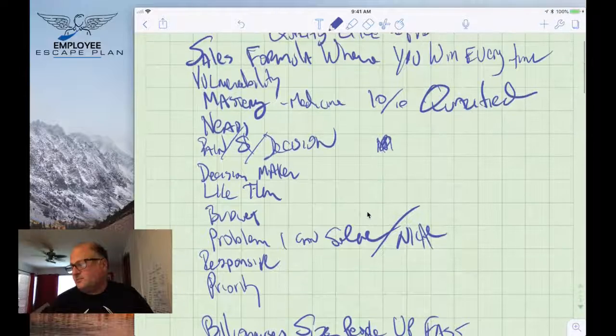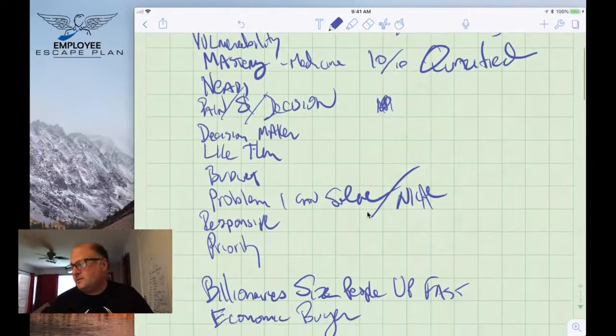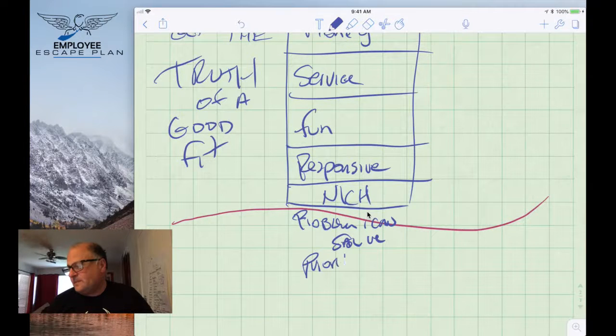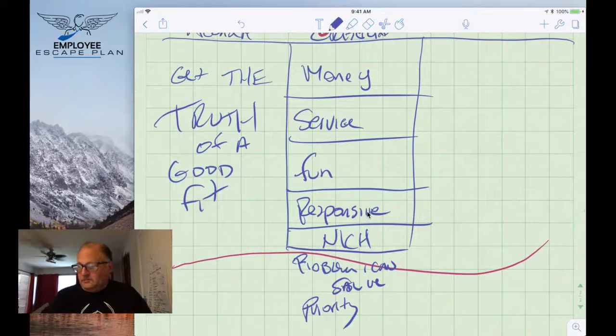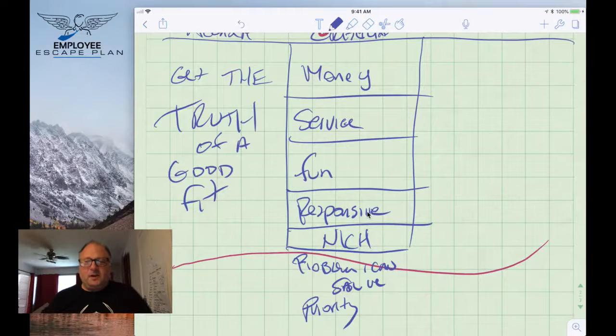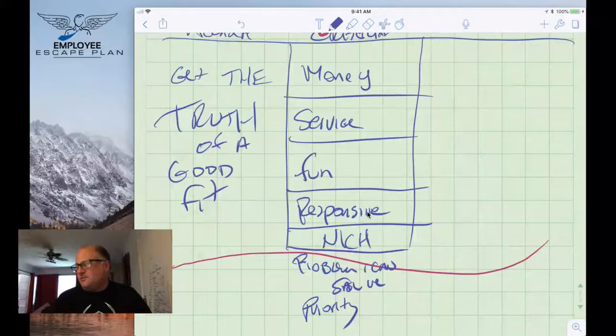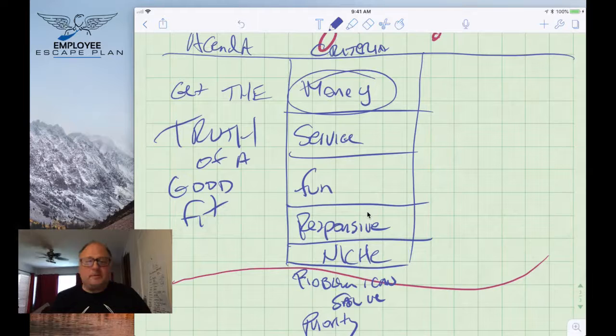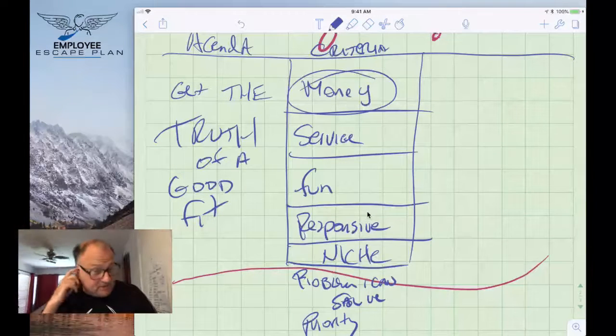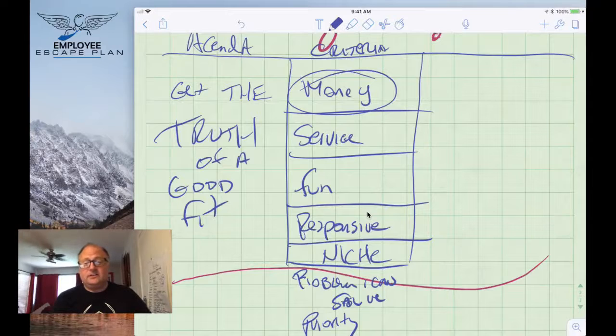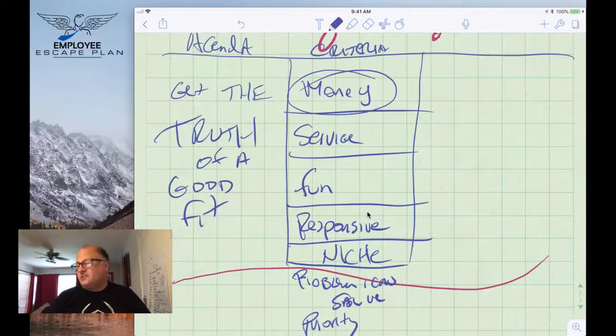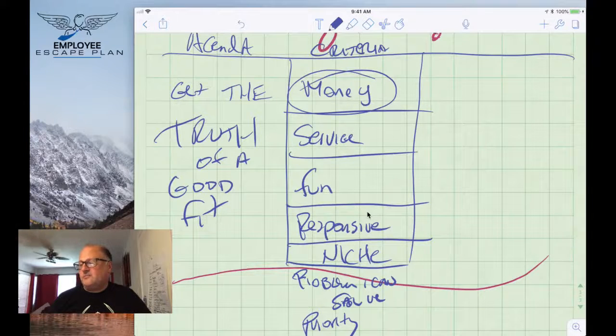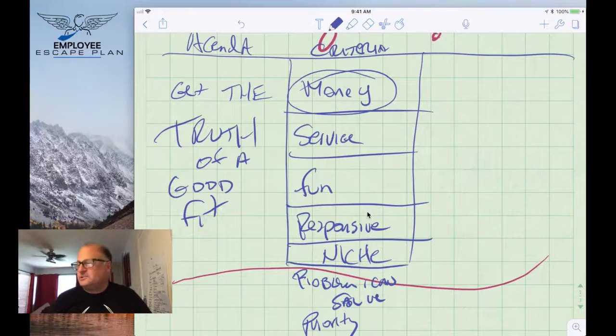Do they have a problem I can solve? Do they have money? Do they have a sense of urgency? Is it a priority? I want to know that they have a specific problem. I want to know if they have a problem I can solve. Here's a big one, the money. Are they an economic buyer? Are you capable, if this is right for you, of cutting me a check? If you're not capable of cutting me a check, who is? It's not a good fit. Why would I talk to you? You're not qualified if you're not the guy or the lady that can make a purchase decision.